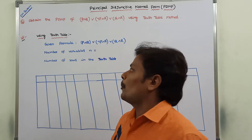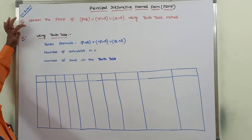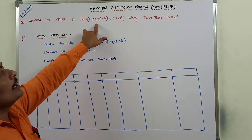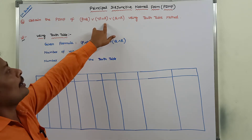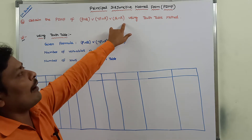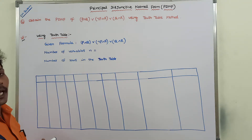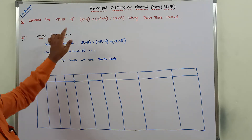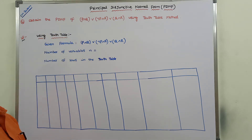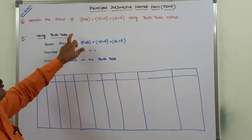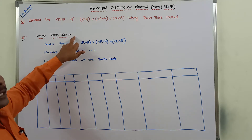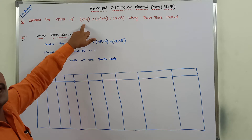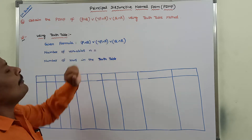Now, obtain the PDNF of (P∧Q) ∨ (¬P∧R) ∨ (Q∧R) using the truth table method. So here we are using the truth table method. By using the truth table method we have to find out the equivalent PDNF for the given formula.